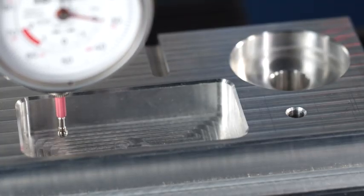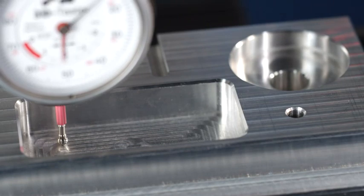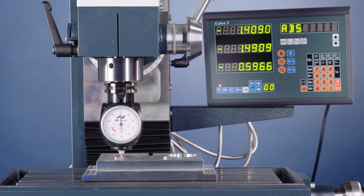Then move the sensor to the bottom of the pocket until the black and red hands arrive at zero. Now the value of Z on your control illustrates the depth of the pocket.